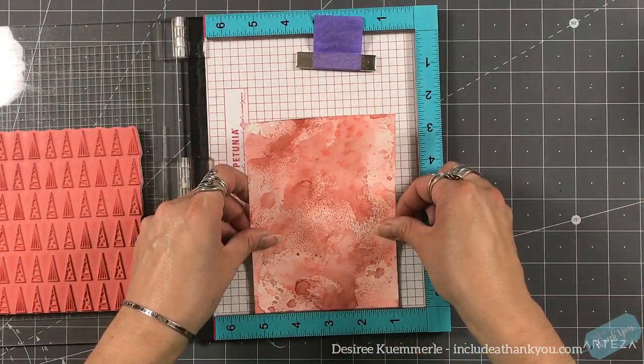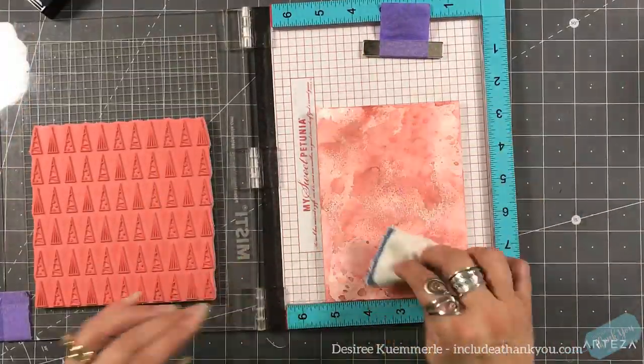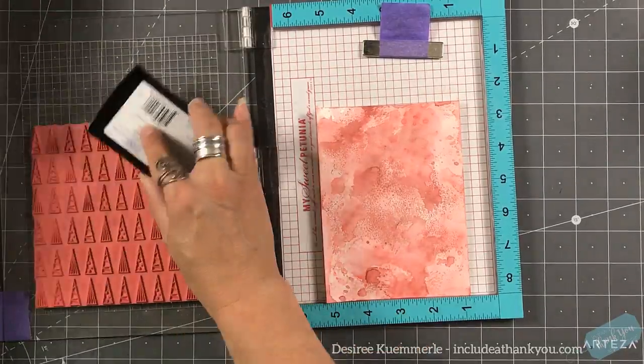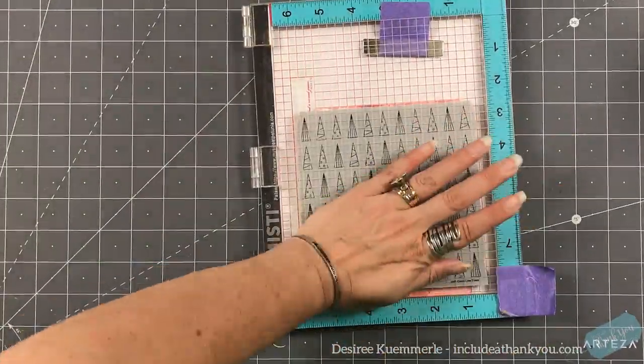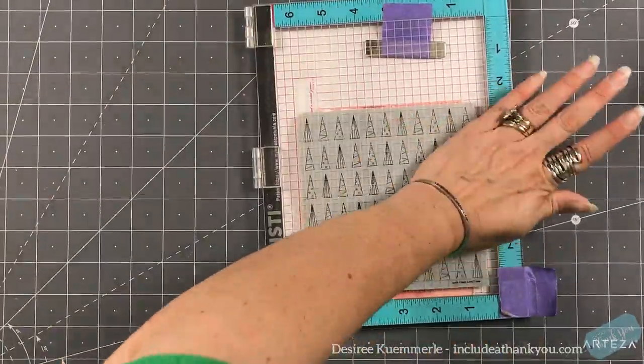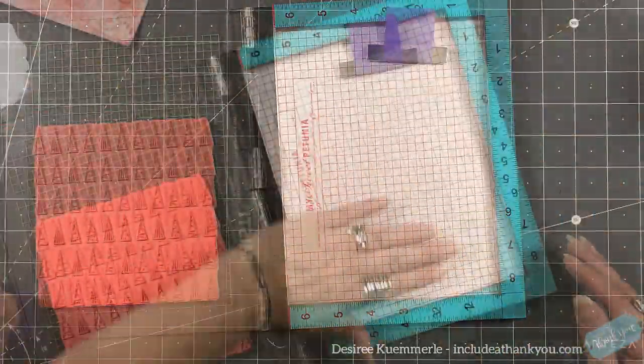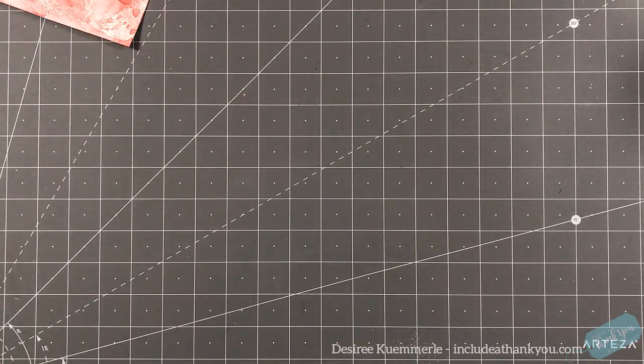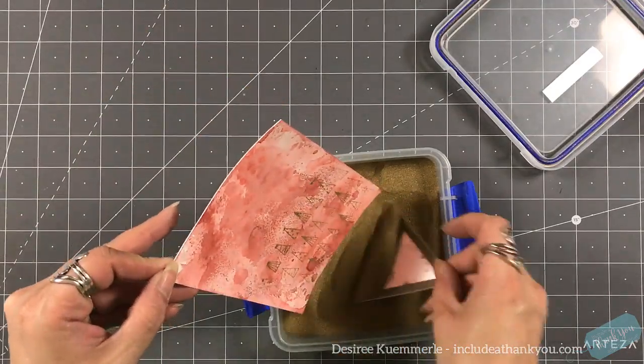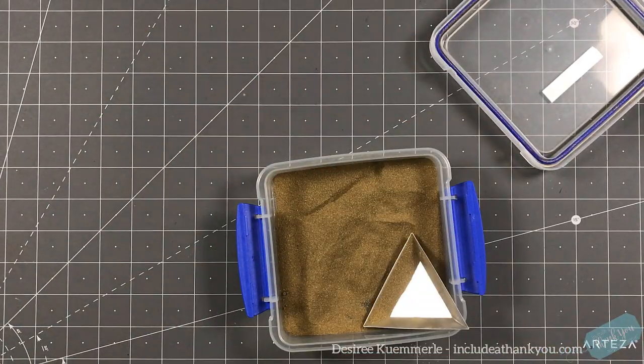So for my second background, I'm going to pull the one up again, putting the repositional tape on the back and I'm going to do the same thing. I'm going to prep it with my anti-static pouch. And I'm going to stamp this a couple of times using my VersaMark ink. I do like to make sure I have a good impression. So I do like to stamp that twice. Now for this one, I'm going to use gold embossing powder and I'm going to cover the whole piece with that as well.